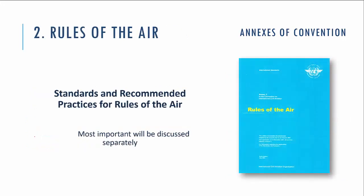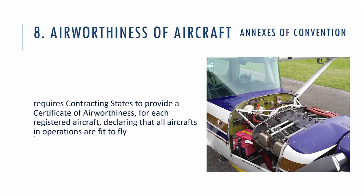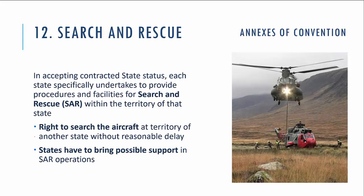Annex 2 covers the rules of the air — a very wide and extensive topic that will be covered in a separate series of videos. Annex 7 covers aircraft nationality and registration marking, which will also be discussed in an additional video. Annex 8 covers airworthiness of the aircraft, defining SARPs about the certification of airworthiness, and will also be discussed separately.